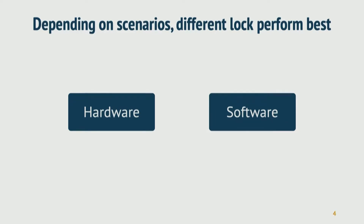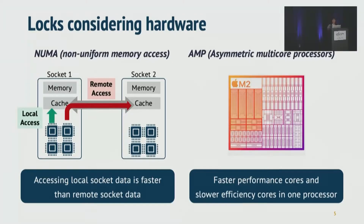The scenarios include system hardware configuration or software characteristics of the application. Let's first see the hardware side. For hardware examples, we can first consider NUMA. On NUMA architecture, there are multiple sockets and each socket has its own processors, memory, and cache. In this NUMA environment, accessing data from a local socket is much faster than accessing data in a remote socket. To achieve higher performance, developers can prioritize local access over remote access.